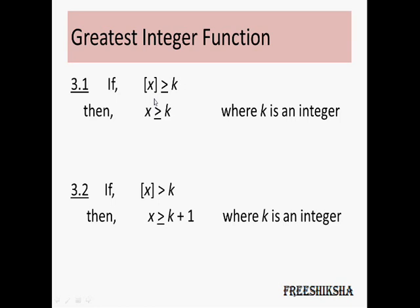The third property: if the greatest integer of x is greater than or equal to k, then x has to be greater than or equal to k. Similarly, if there is no equal-to sign — greatest integer of x greater than k — then x has to be greater than or equal to k plus 1. For example, if greatest integer of x is greater than 2, then values like 2.5, 2.6, or 2.7 don't qualify since their greatest integer is 2, which is not greater than 2. So x must be 3 or greater, which is k plus 1.